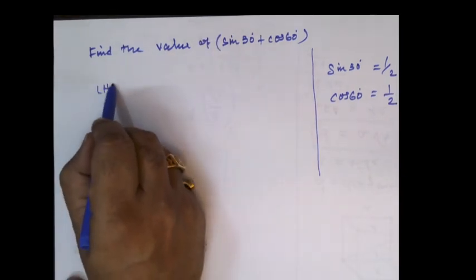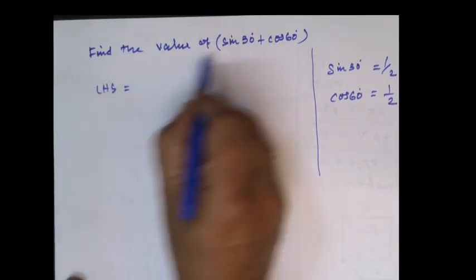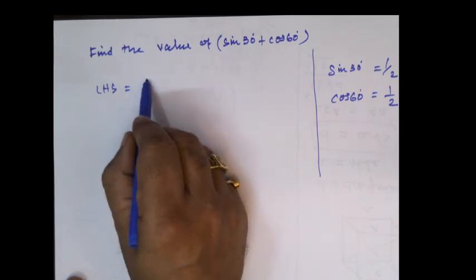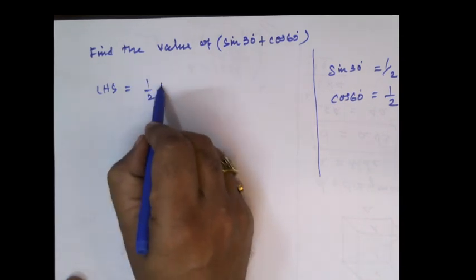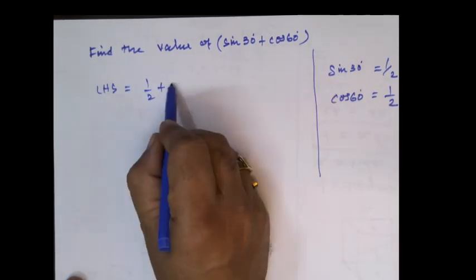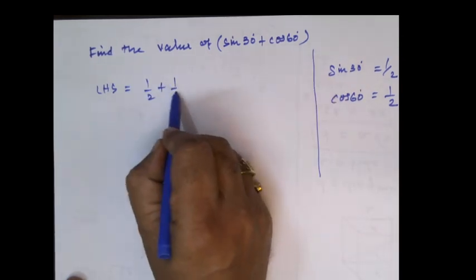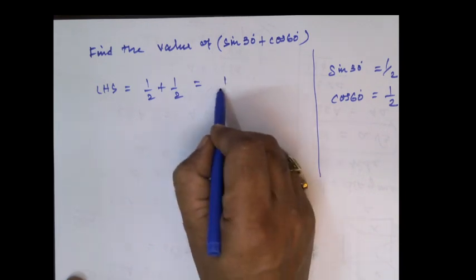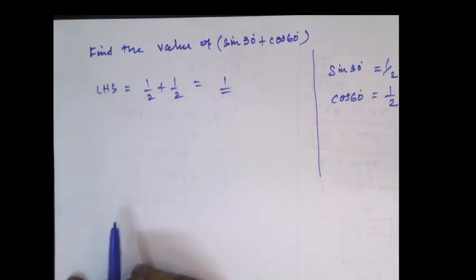LHS is equal to sine 30 is 1 by 2 plus cos 60 is 1 by 2. Half plus half is 1. That is all. Very simple.